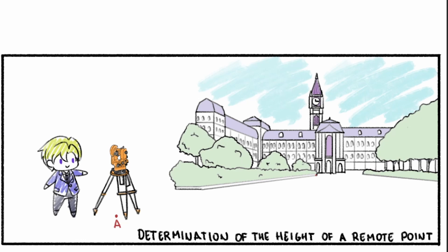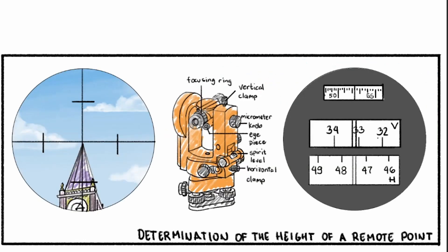Next, rotate the telescope of your theodolite vertically until you can see the top of the tower. Once spotted, lock the vertical and horizontal clamps. The horizontal and vertical clamps are located here and here. Turning these clamps will prevent the theodolite from further moving vertically and horizontally.